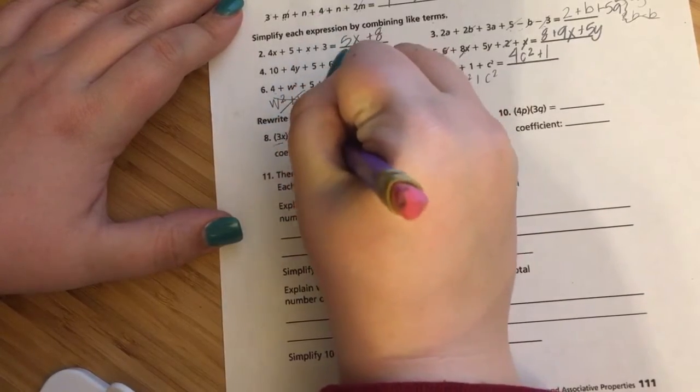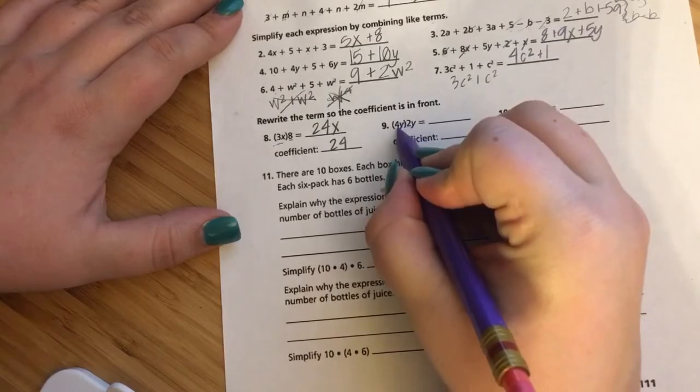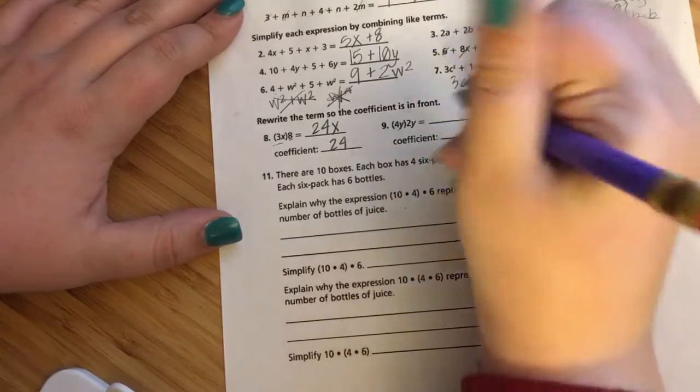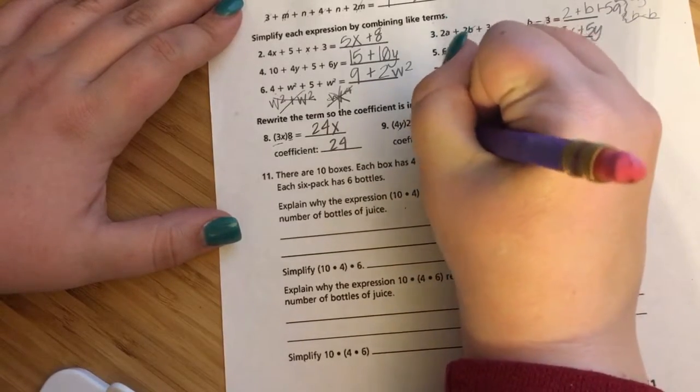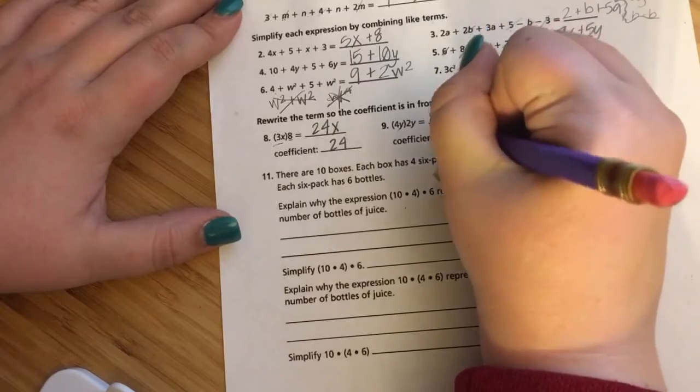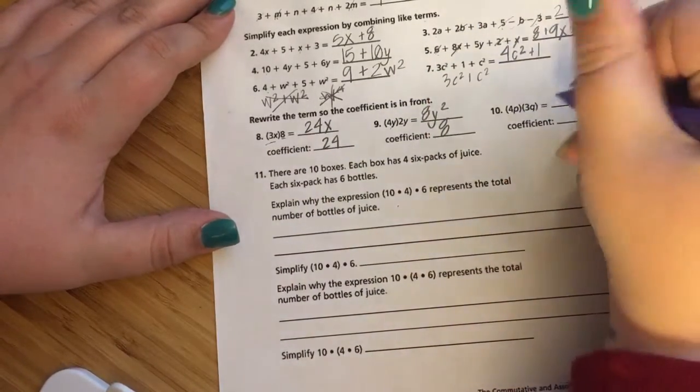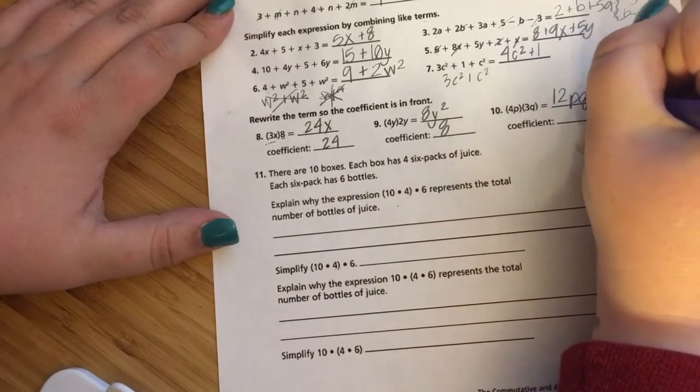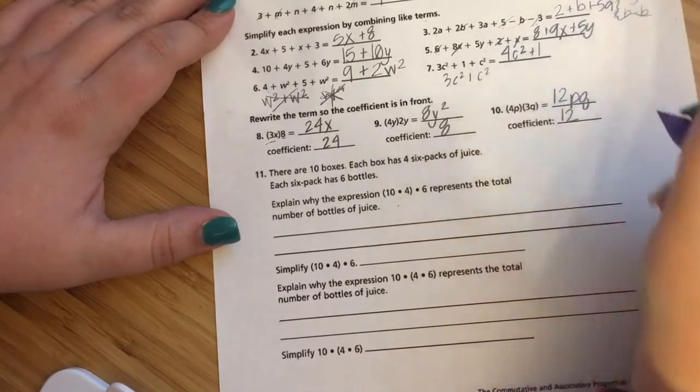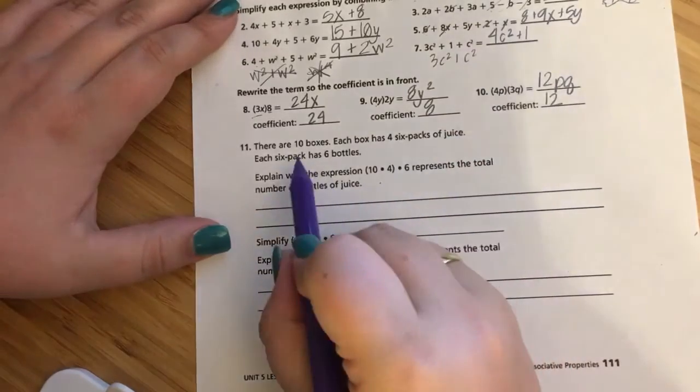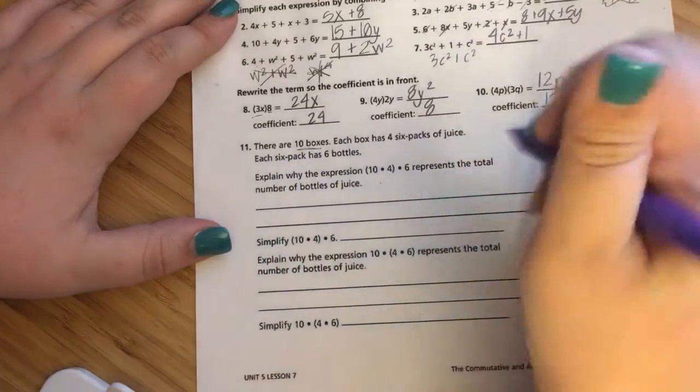So this time, I'm going to rewrite these and then write the coefficient. 3 times 8 is 24, making it 24X. The coefficient is 24. 2 times 4 is 8, and this will end up being 8Y squared because I have this Y times Y, coefficient being 8. 4P times 3Q is 12PQ, coefficient of 12.